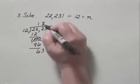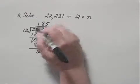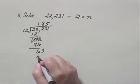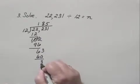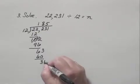12 goes into 63 five times. 5 times 12 is 60. We subtract and have 3. And we bring down the last digit which is 1.